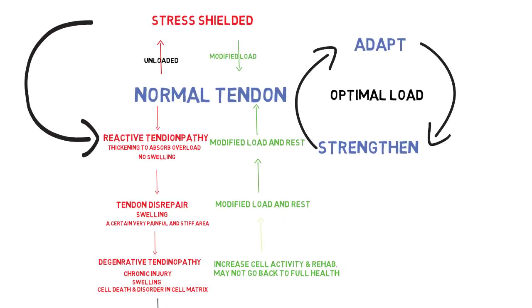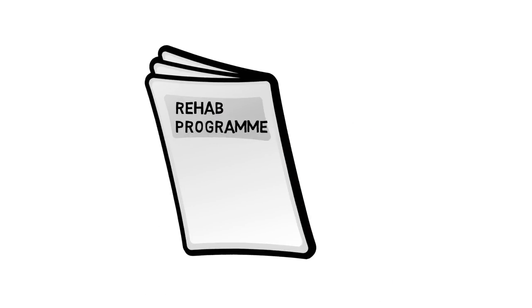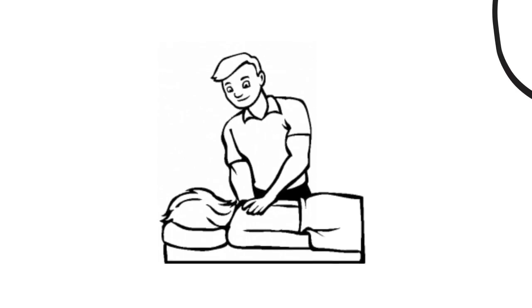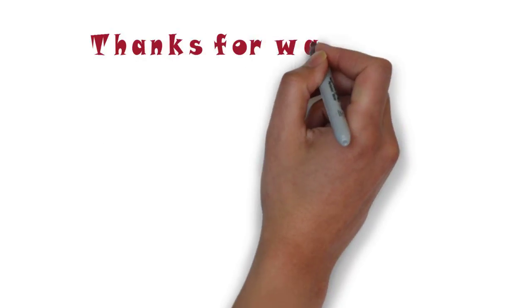Using Cook's model in this paper, it's possible to see that the best way to combat a tendinopathy problem — whether it's a tendinosis or a tendonitis — would be a suitable rehab program which modifies load and volume, as well as manual therapy which can potentially help to speed up the recovery. For more info, check out the link below.